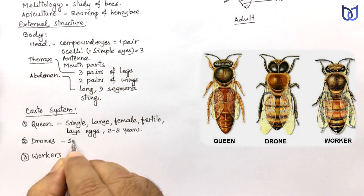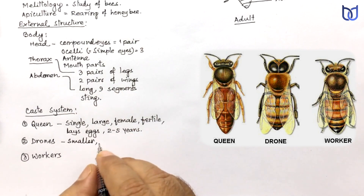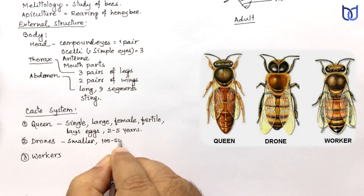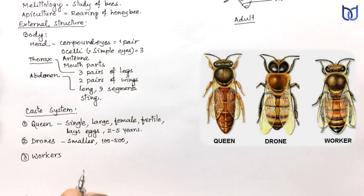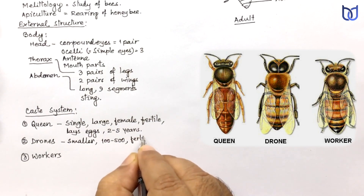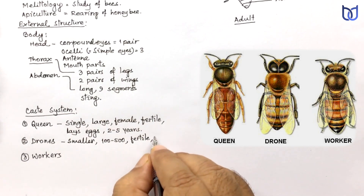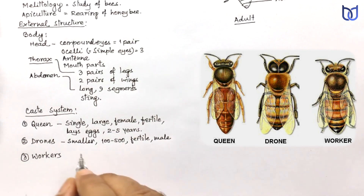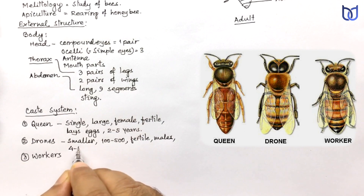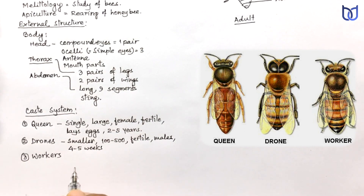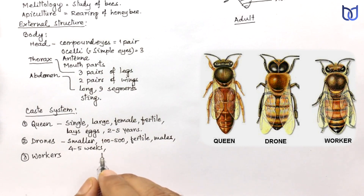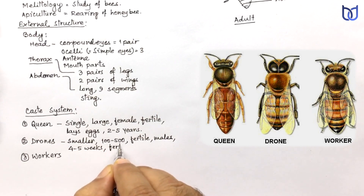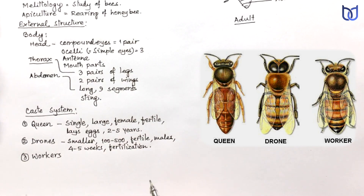Drones are smaller than the queen. Their number usually varies from 100 to 500 in a colony. These are fertile, meaning reproductive, but male individuals. So the queen is the fertile female and drones are the fertile male. They live for about four to five weeks, and their duty is to mate with the queen in order to fertilize the eggs — so fertilization is the duty of drones.